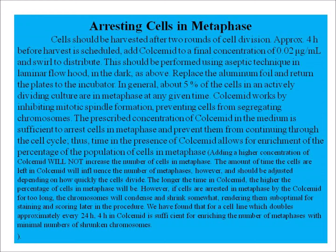Cells should be harvested after two rounds of cell division. Approximately 4 hours before harvest is scheduled, add colcemid to a final concentration of 0.02 µg/ml and swirl to distribute. This should be performed using aseptic technique in a laminar flow hood in the dark. Replace the aluminium foil and return the plates to the incubator. About 5% of cells in an actively dividing culture are in metaphase at any given time. Colcemid works by inhibiting mitotic spindle formation, preventing cells from segregating chromosomes, thereby enriching the percentage of cells in metaphase.